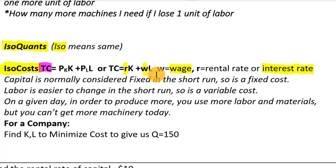Another important consideration in production analysis is the time horizon. In the short run, at least one input is fixed and cannot be changed — normally capital. The number of buildings or machines takes longer to change than simply keeping workers longer or sending them home early. In the long run, given enough planning horizon — three months, six months, a year — we can change both the amount of labor and the amount of capital.